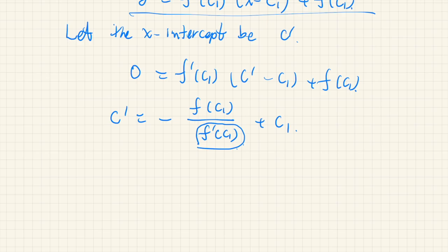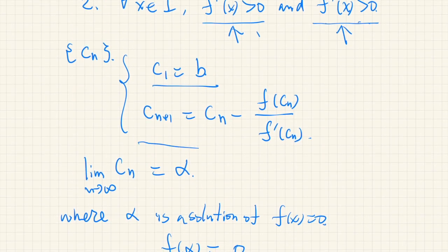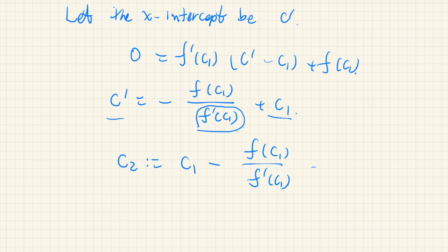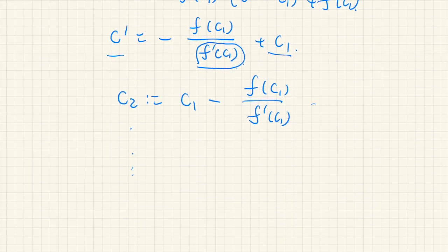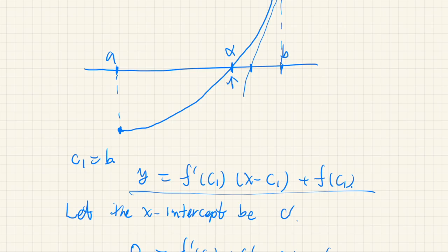So we define this C prime to be C2: C2 equals C1 minus f of C1 over f prime of C1. This is the recurrence relation with n equal to 1, so Cn+1 is C2, using f of C1 and f prime of C1. We continue this process again and again, and now we want to show that this converges to the unique solution.